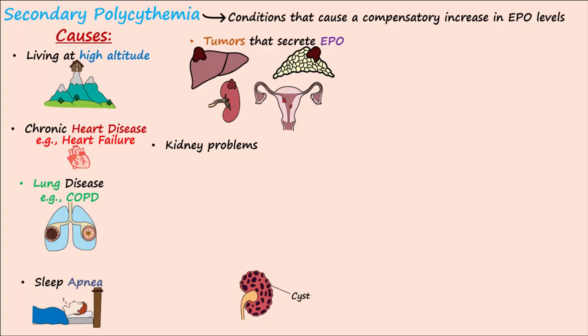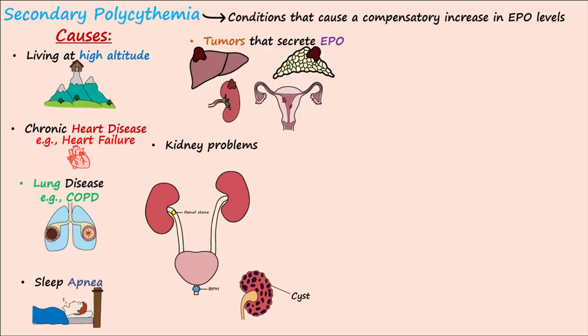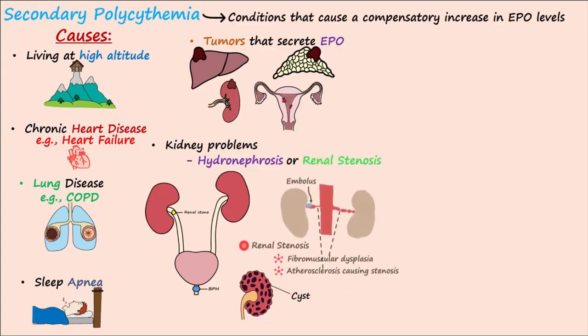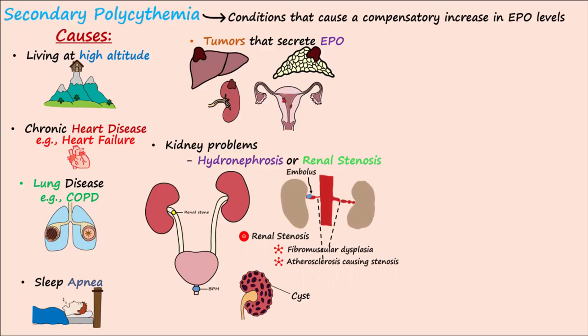Kidney problems such as cysts and other conditions that block the flow of filtrate or urine — such as urinary tract stones — may lead to hydronephrosis, or swelling of the kidney. Hydronephrosis causes the kidney to secrete extra EPO. Conditions that lead to decreased blood flow to the kidney, such as renal stenosis, can also cause the kidney to secrete extra EPO.